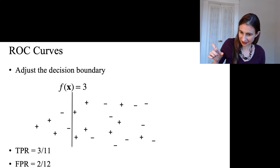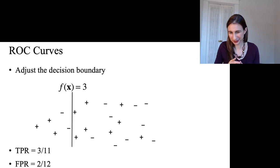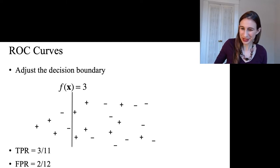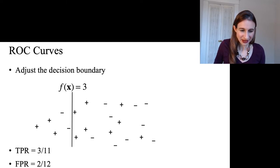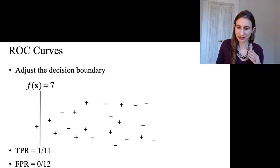Then I can change the dial and move the decision boundary. I'm not changing the function, I'm just simply changing where I'm going to place my decision boundary. And then there, the true and false positive rates change.